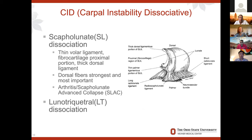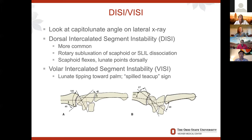We have the term DISI — dorsal intercalated segment instability — and VISI — volar intercalated segment instability. You'll see these on your lateral x-rays. DISI is more common. You get subluxation of the scaphoid and the SLIL dissociation. The scaphoid flexes and the lunate points dorsally.